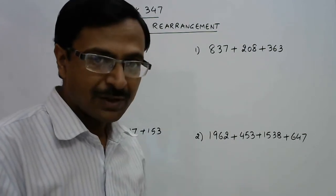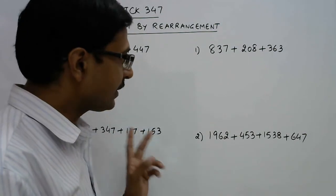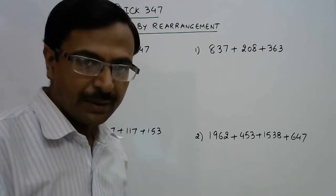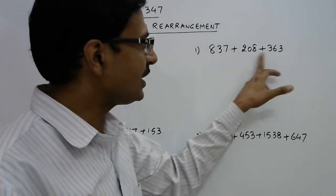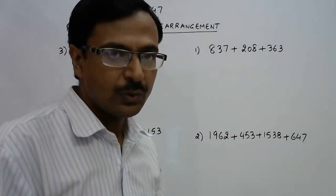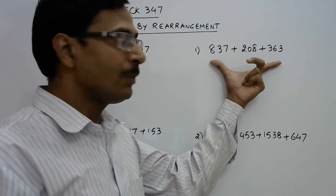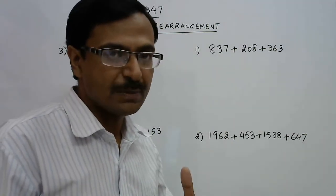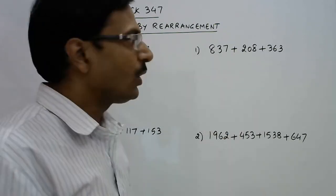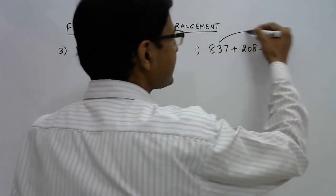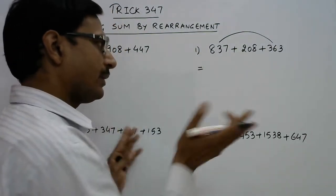Whenever we have to add numbers we need base quantities, so we have to assign priority to those numbers whose sum is a base quantity. See the unit places and pair them up so you get a 0 in the units place. Instead of adding blindly the first two numbers, go with the first and third number.